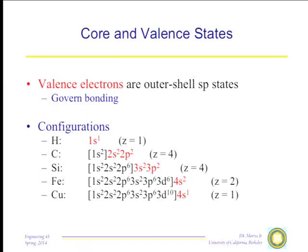An interesting exception is copper. Copper is at the end of the transition metal series and would be expected to have a 3d9 4s2 configuration. Because of the advantage in having a fully filled inner shell, it turns out to be energetically favorable for copper to flip one of these S electrons into the 3D state to fill it up, leaving it with one S electron. This makes copper an outstanding electrical conductor, as we will see later.